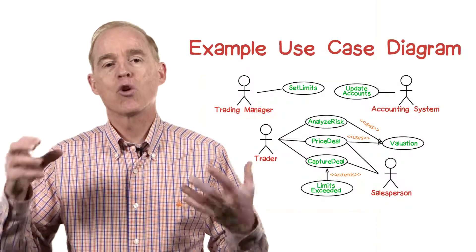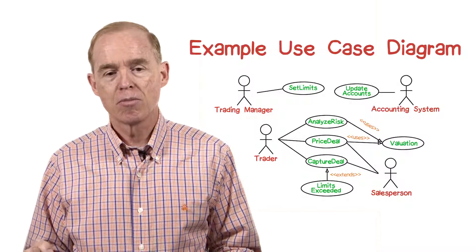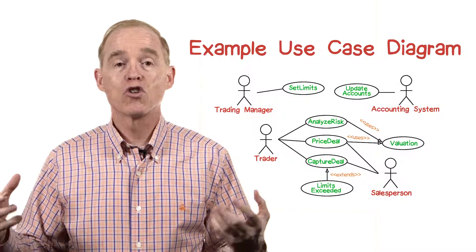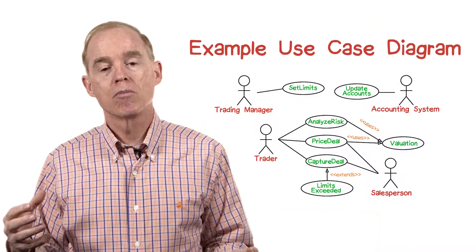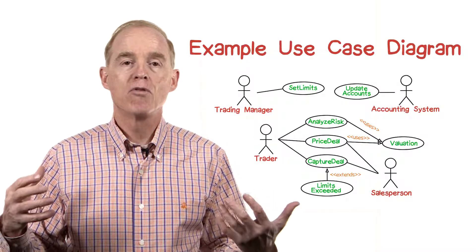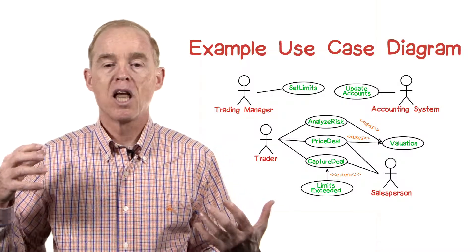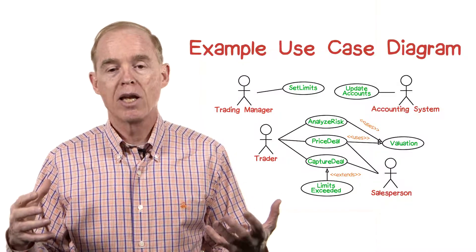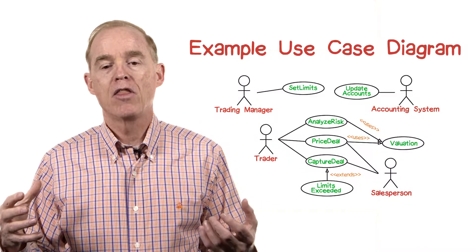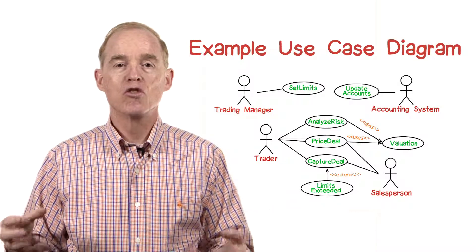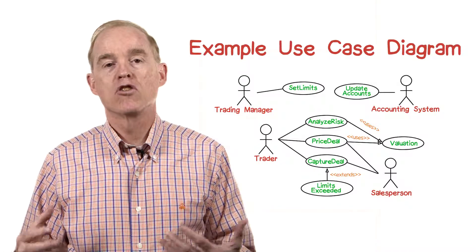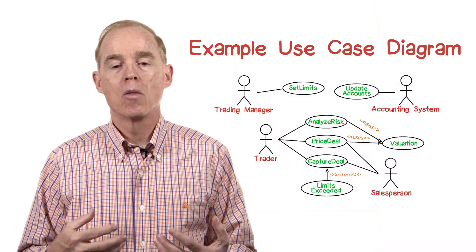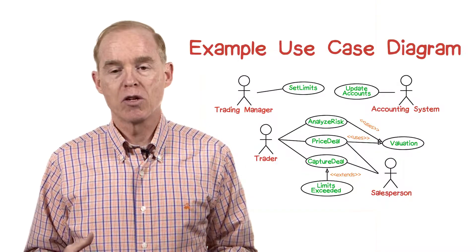Each of the ovals corresponds to a use case. The stick figures correspond to external actors. Some of the lines are labeled and indicate that the particular use case is used for a special purpose, such as being included in another use case or being shared among several use cases.